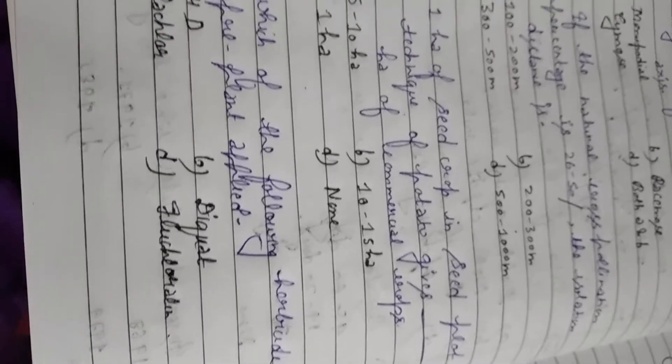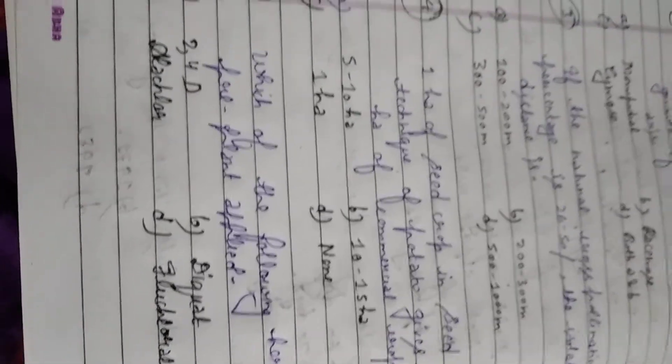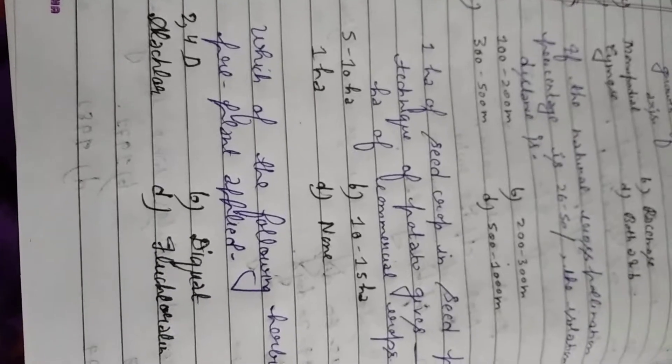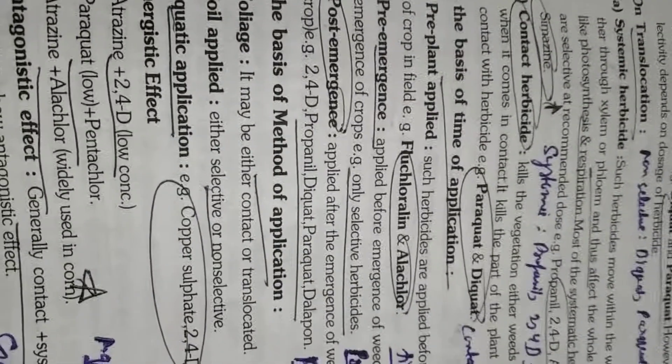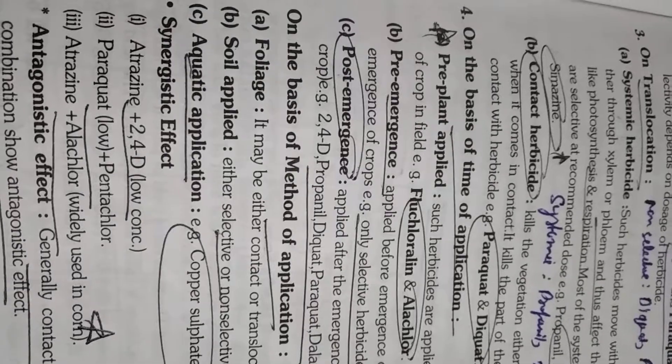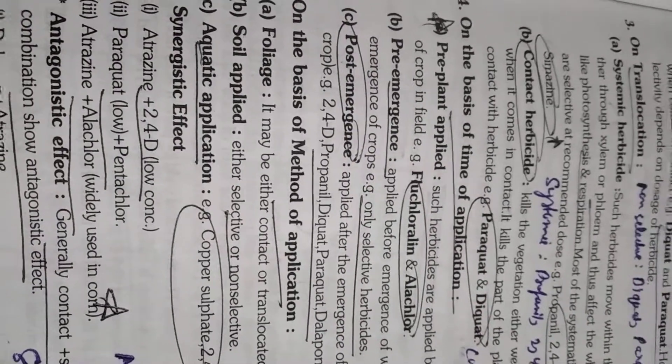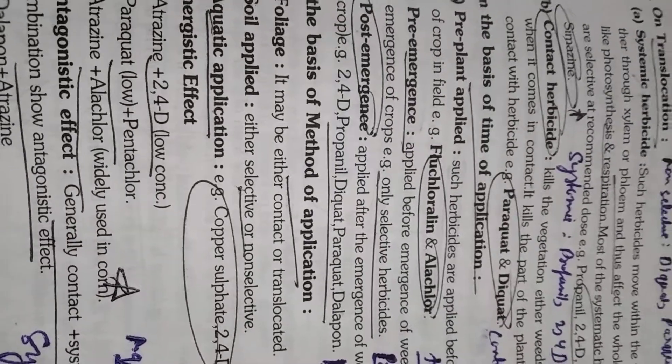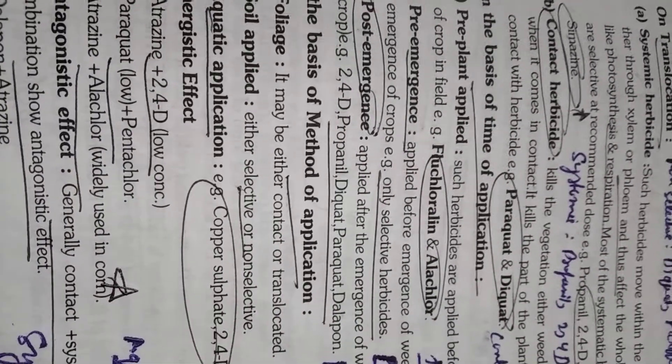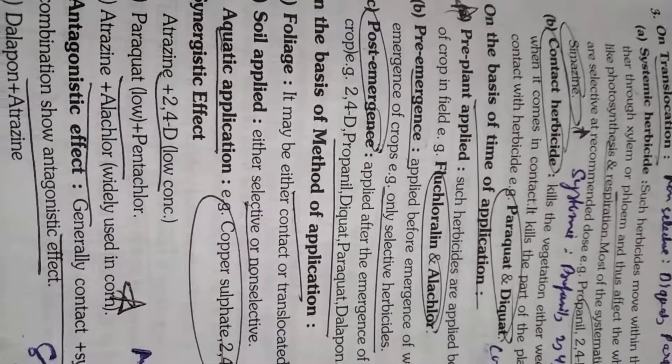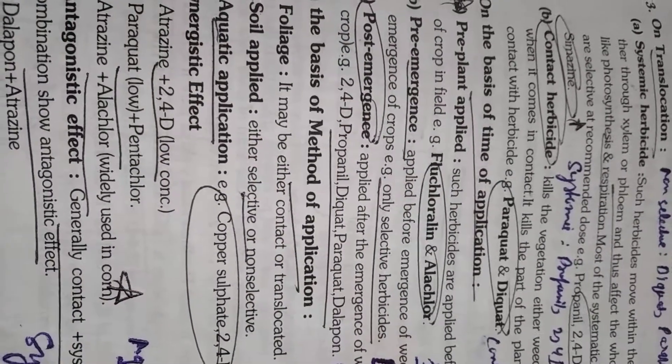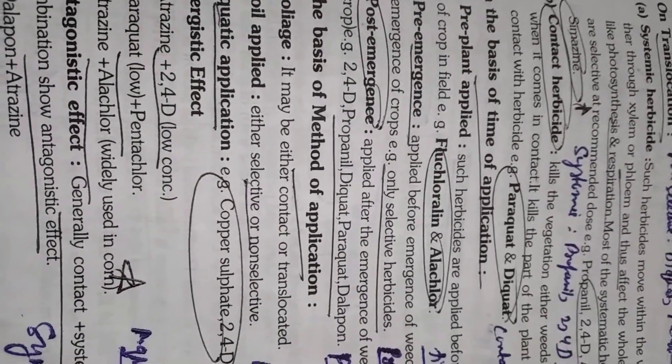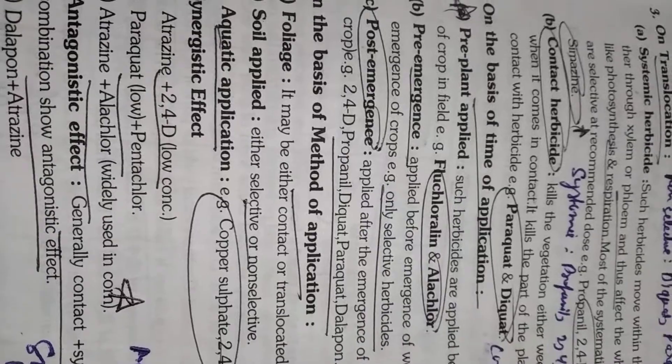Question number 5. Which of the following herbicide is pre-plant applied? Option A 2,4-D, Option B dicot, Option C alachlor, Option D fluchloralin. So student this is again very basic fundamental question. All of you must have done it correctly. But still pre-plant applied herbicides are fluchloralin and alachlor. Pre-emergence herbicides are only selective herbicides and post-emergence herbicide is 2,4-D, propanil, dicot, paraquat, thiobencarb. Please students remember them.